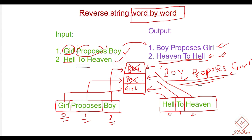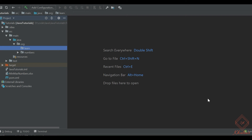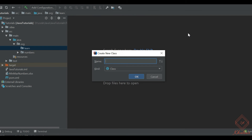Let's see how we can achieve this via code. Let me bring out my editor. Let's create a class — let's name it ReverseStringWordByWord. You can name it anything as per your choice. Let's write a method which will reverse the string word by word.